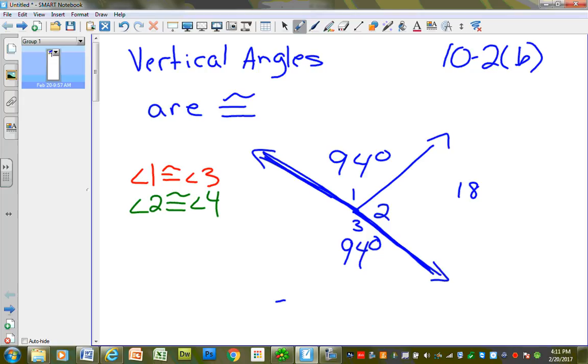So to find the measurement of Angle 2, I just take 180 minus 94. And when I do that, what do I get? 86. So this is 86 degrees right here, Angle 2. And that continues on, so that means that Angle 4 is also 86 degrees.